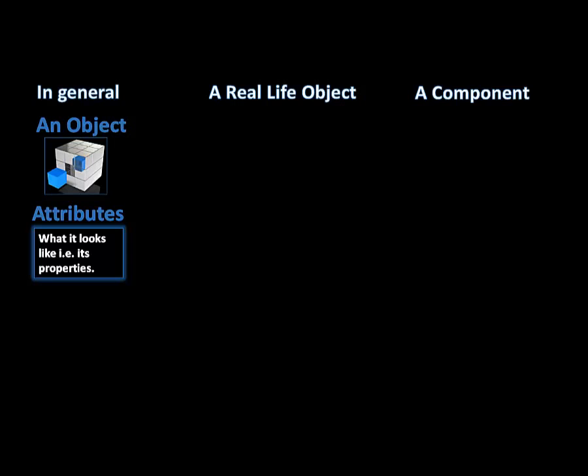In general, all objects can also perform actions. We refer to these actions as the behavior of the object. The behavior of an object defines what an object can do.